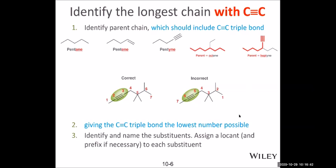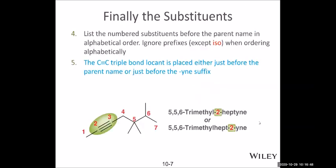The rest of the naming is fairly straightforward. The location of the triple bond is similar to the alkene — it can be placed either in the middle of the name or right in front. Going from left to right gives the longest chain with the triple bond the lowest number. Since the triple bond is between carbons two and three, the triple bond starts from carbon number two, giving us a 2-heptyne.